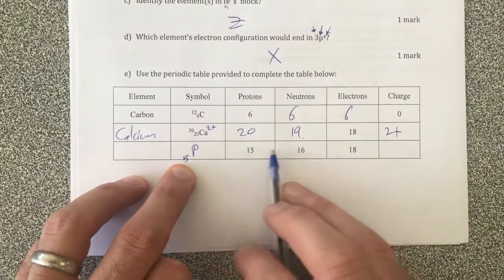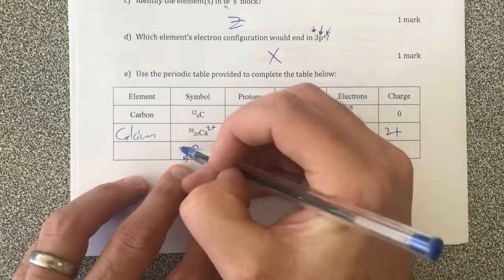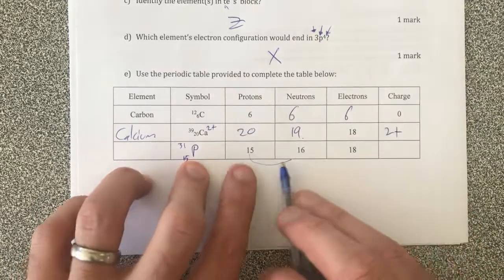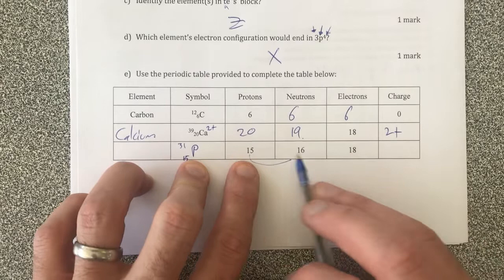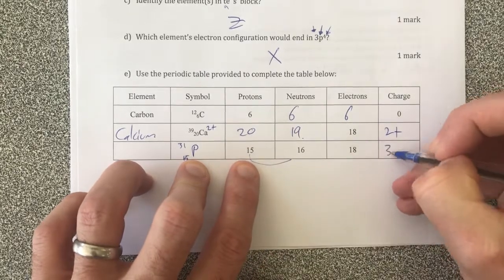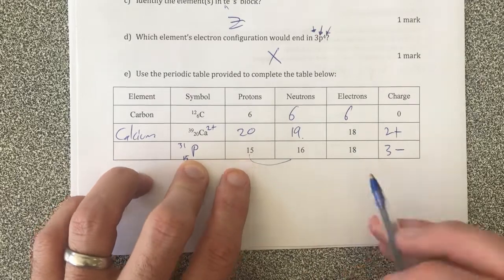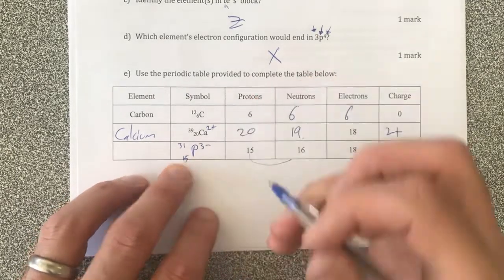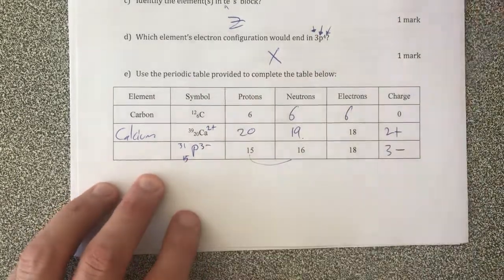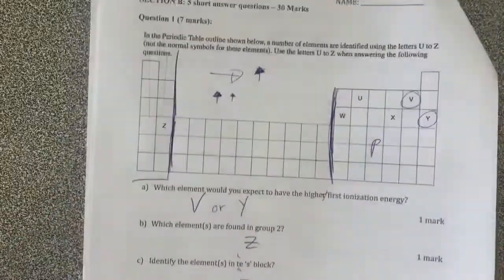My protons are 15. My mass number would be these two joined together, which would be 31. If I've got 18 electrons and only 15 protons, my charge should be negative 3 because I have three extra electrons. So therefore it should be P3 negative, and that's going to be phosphorus. And that's the answer to the first question.